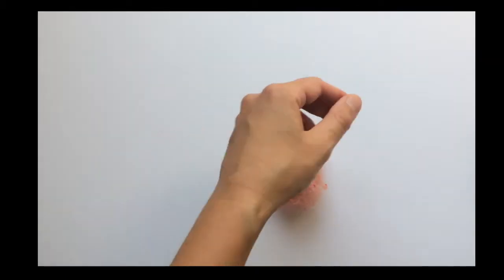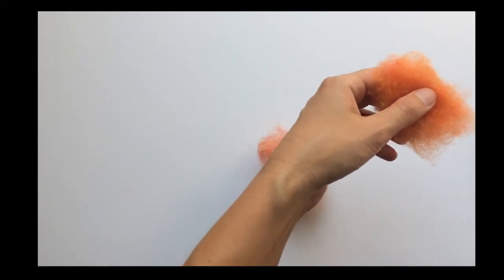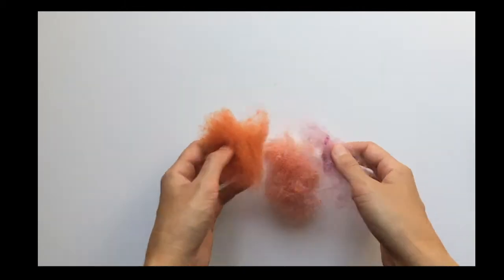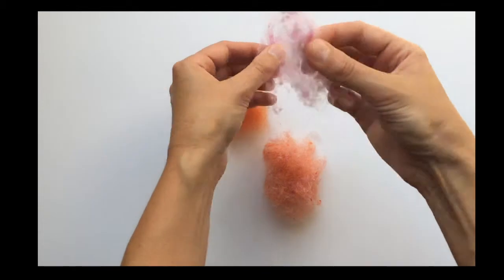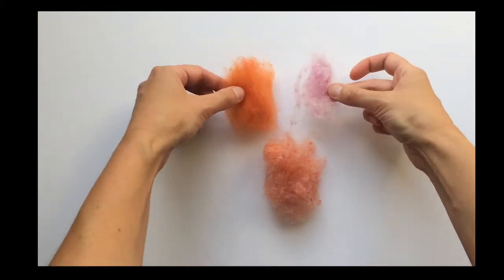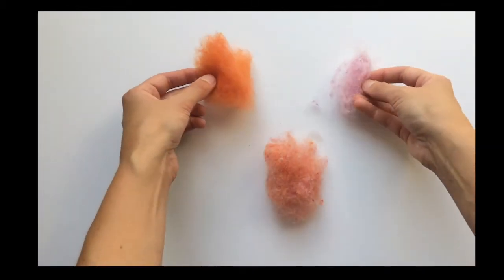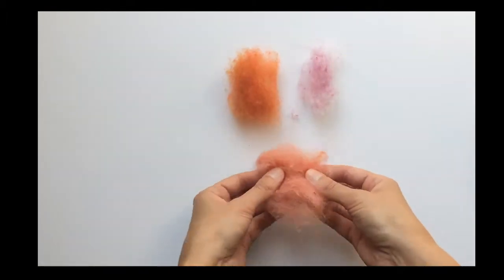So let's just see what our original colors were just for reference. We can see what we did. This was the Harvest Moon and this was the Water Lily. I don't have too much of it left there. But as you can see we definitely were able to change those two colors into this new color.